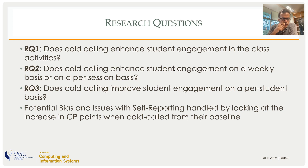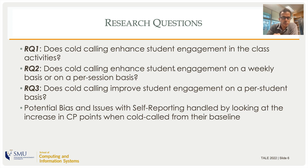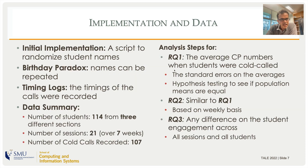We noticed that there are potential biases in the case of self-reported class participation entries, but we can nullify its effect by looking at the increase in class participation points when cold called as opposed to their baseline. We have 114 students in three different sections of the course, and over the seven weeks, we recorded 107 cold calls.